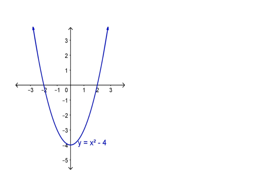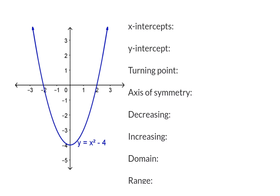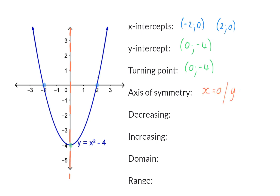For any graph there are certain coordinates and lines you need to identify. You need to identify the x-intercept — in our example at minus two zero and two zero. Next, give the coordinate of the y-intercept, which in this case is also the turning point at zero minus four. The turning point also indicates the axis of symmetry — a line dividing the graph into two mirror images. In our example this is the line x equals zero, which is also the y-axis.